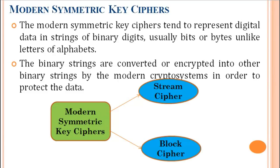Now, modern symmetric key cipher. In this, the whole operation is performed in binary digits — in the form of zeros and ones. Modern symmetric key ciphers represent digital data as strings of binary digits, usually bits or bytes, like letters of alphabets. Binary strings are encrypted into other binary strings by modern cryptosystems in order to protect data. Modern symmetric key ciphers are further classified in two categories: first one is stream cipher and the other one is block cipher.